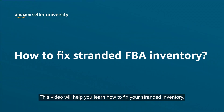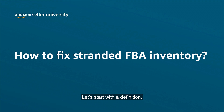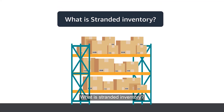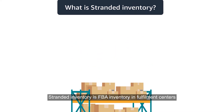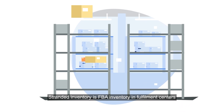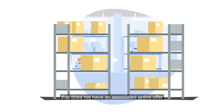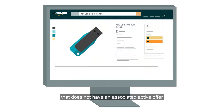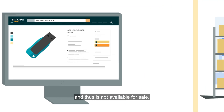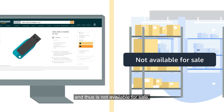This video will help you learn how to fix your stranded inventory. Let's start with a definition. What is stranded inventory? Stranded inventory is FBA inventory in fulfilment centres that does not have an associated active offer and thus is not available for sale.